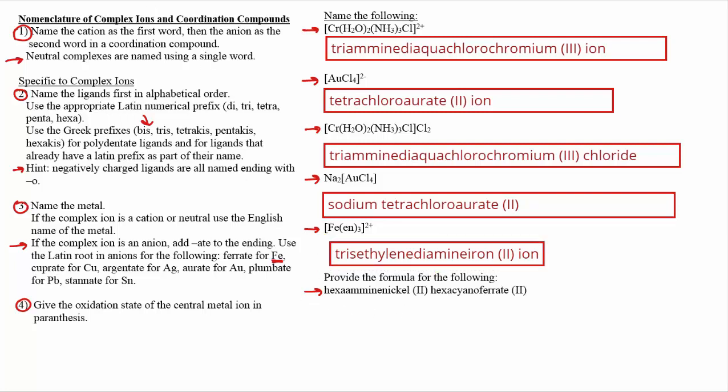Finally, in the last example here, we're given the name this time, and we have to come up with a formula. And so in this case, we've got hexaamminenickel(II). So nickel is the metal. That's first in the formula, although last in the name. And then hexaammine means there are six amine ligands. And they're telling us it's nickel with a plus two oxidation state. So if amine's neutral, and nickel's plus two, this whole thing has a plus two charge.